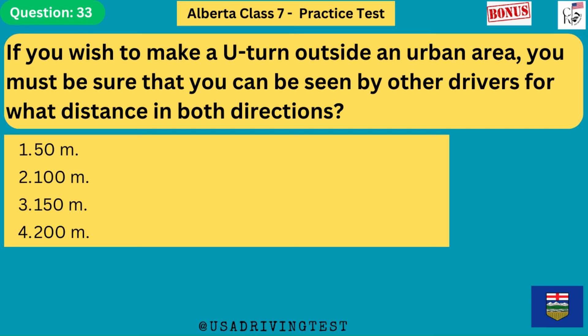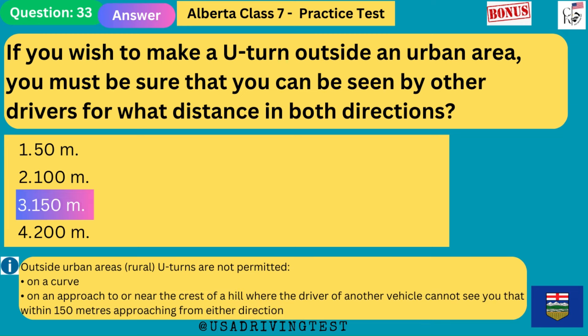If you wish to make a U-turn outside an urban area, you must be sure that you can be seen by other drivers for what distance in both directions? 1. 50 meters. 2. 100 meters. 3. 150 meters. 4. 200 meters. The answer is 3: 150 meters. Outside urban areas (rural), U-turns are not permitted on a curve, on an approach to or near the crest of a hill where another driver cannot see you within 150 meters approaching from either direction.